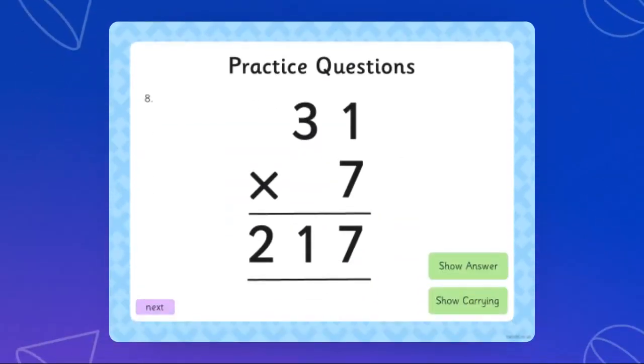And then the last question, 7 times 1 is 7, and 3 times 7 is 21, which we made sure that there is no regrouping in this question.